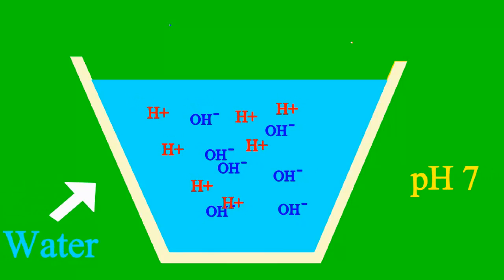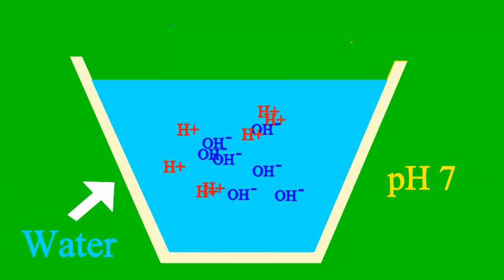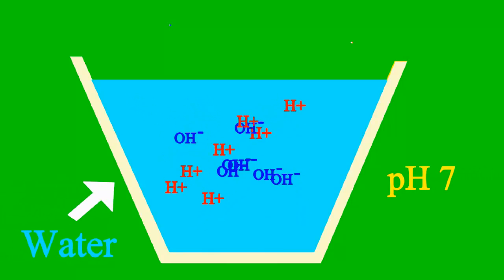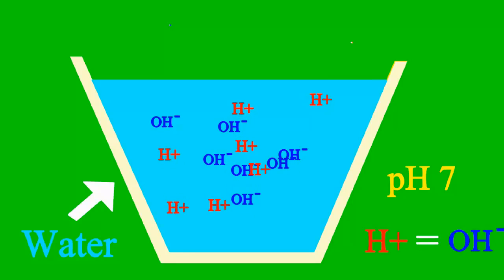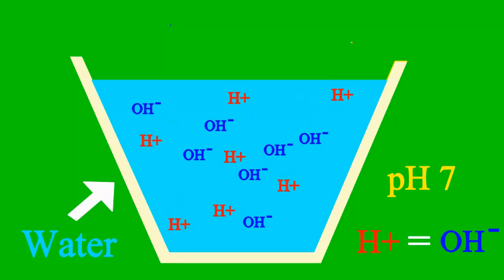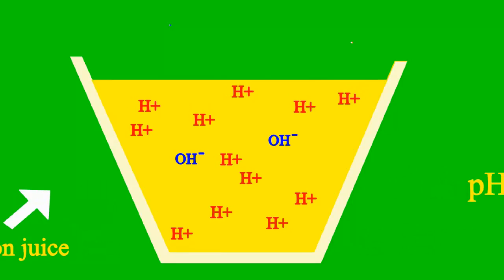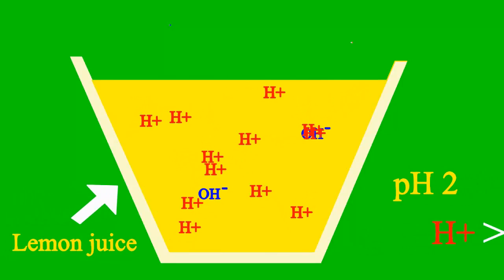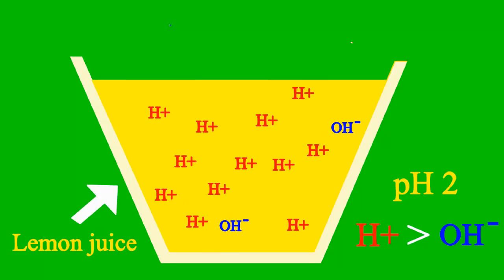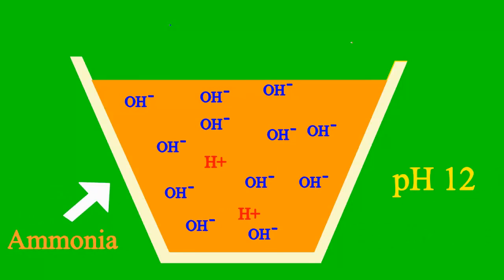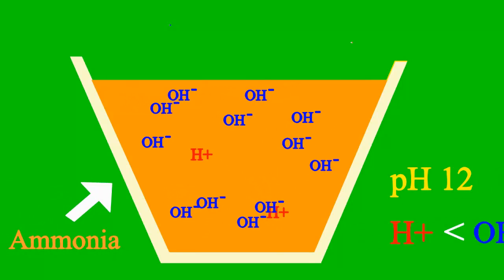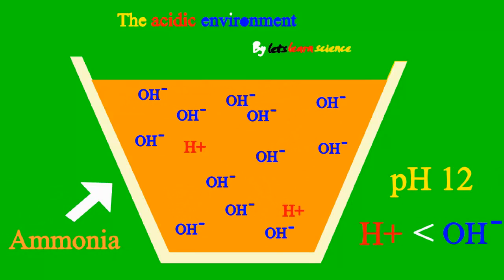When the pH is 7, it's a case where the sample is neither an acid nor a base. But less than 7 it's an acid, and more than 7 it's a base all the way.